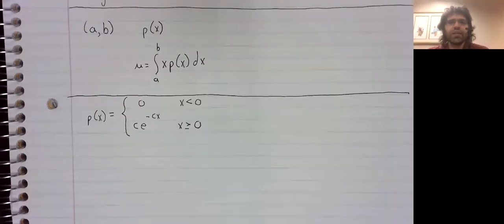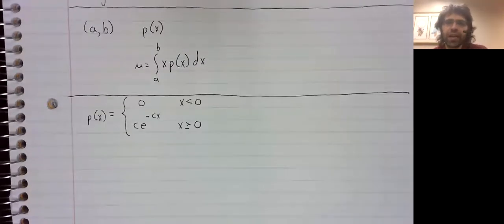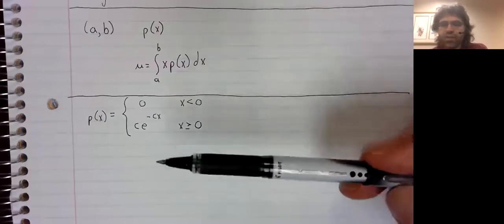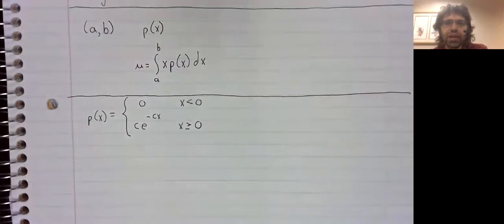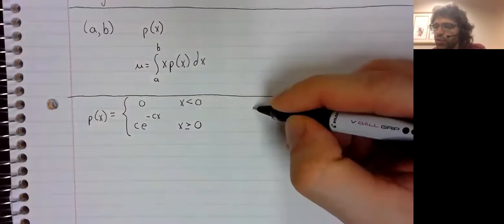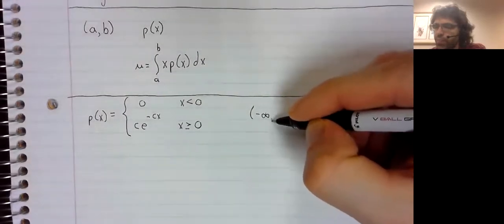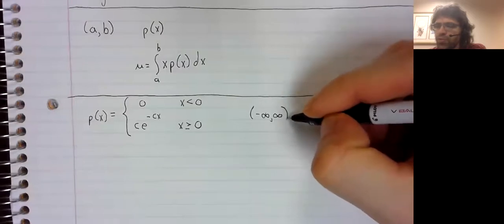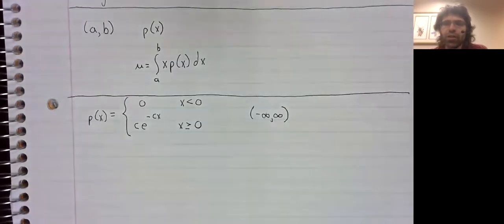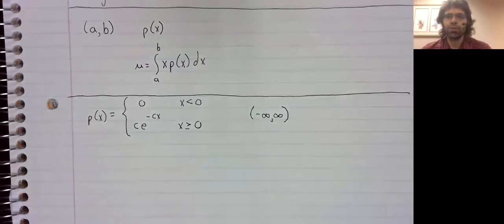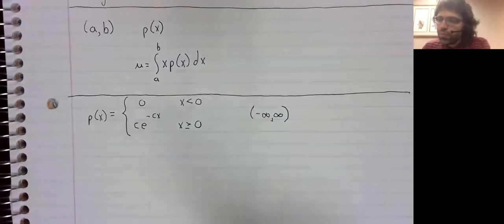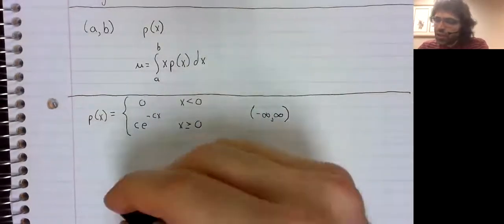Let's find the expected value of this exponentially decreasing probability distribution. It's a probability distribution on the entire real numbers, even though the probability of getting a negative number is zero.